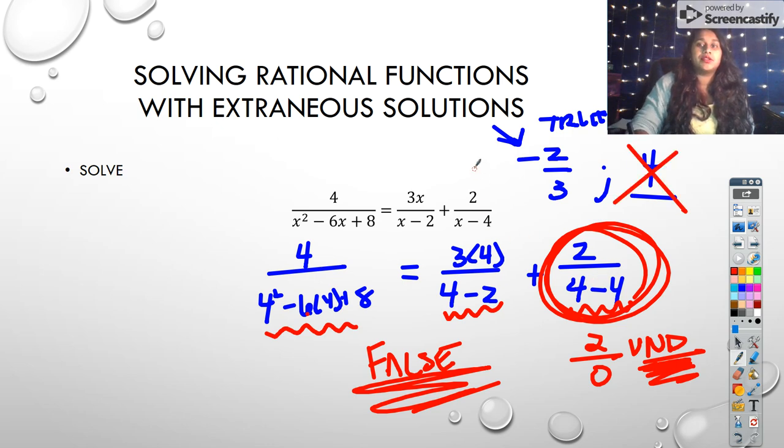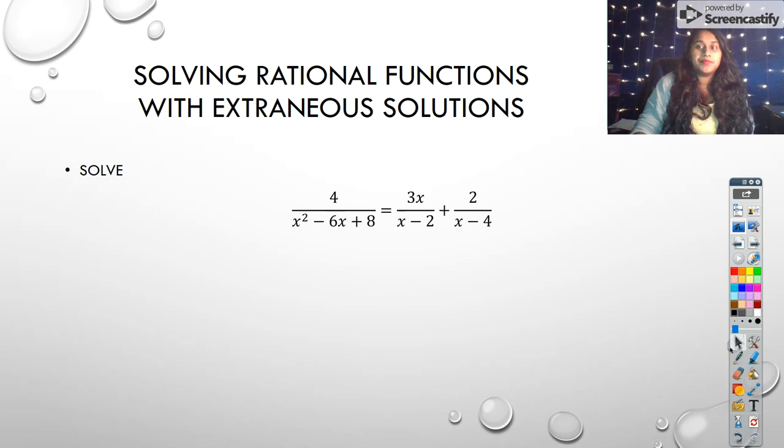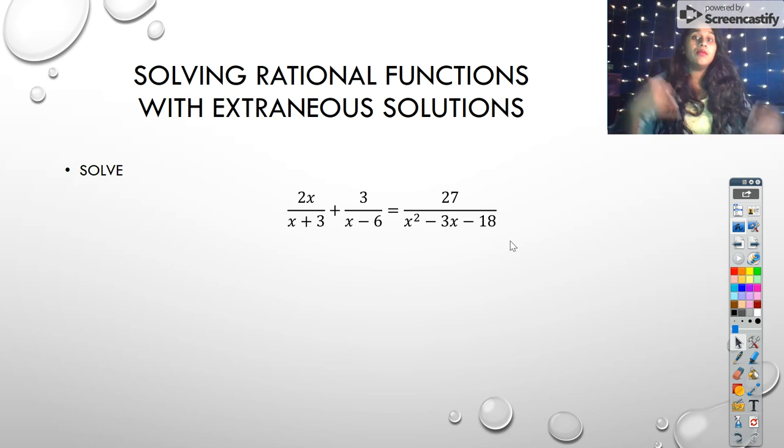Therefore, 4 is not one of our answers. Our only answer is that x equals negative 2 thirds. And I believe I have one solution, one example for you to pause and do. There it is. Work through it. Check for your extraneous solution.